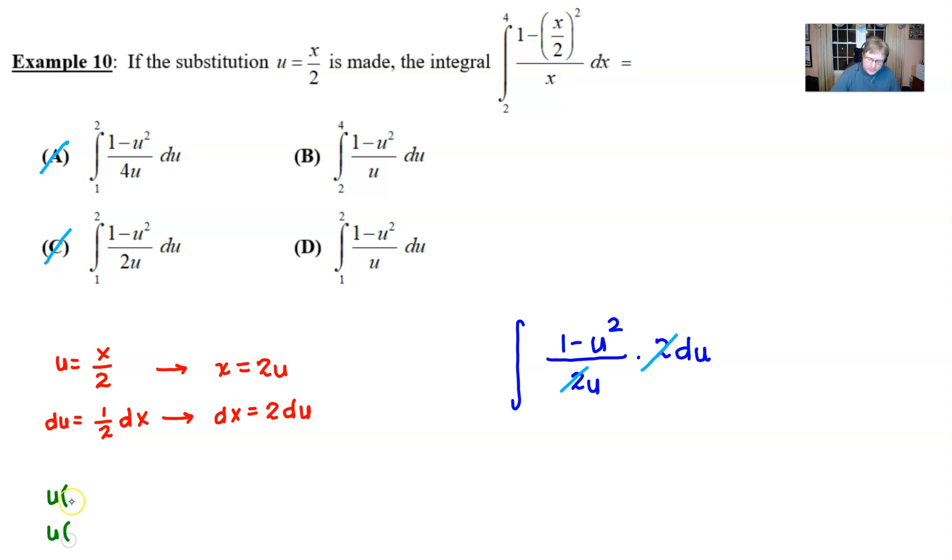By taking the original 4 and plugging it in for our x 4 divided by 2 of course is 2 and at that point you probably know that the answer has got to be choice d but let's just figure out what this lower boundary is just for the heck of it but if we plug in the 2 and we divide 2 by 2 we're going to get 1 and that certainly is consistent with what choice d is.